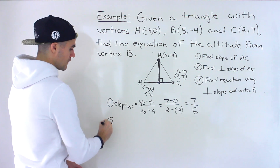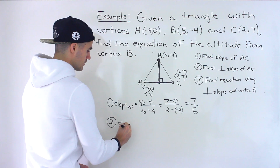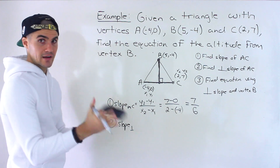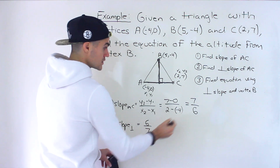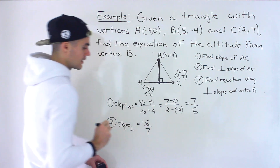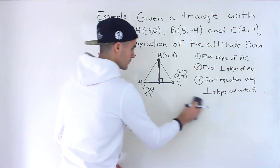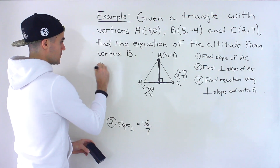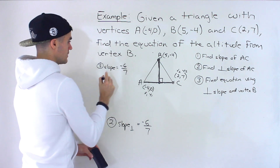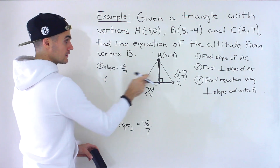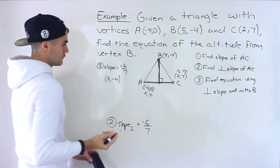Step 2: find the perpendicular slope, which is the negative reciprocal of 7/6. We flip it to get 6/7, then change the sign — since 7/6 is positive, the perpendicular slope is negative 6/7.